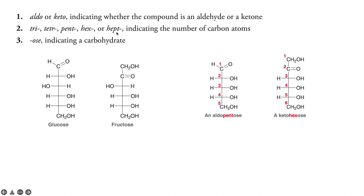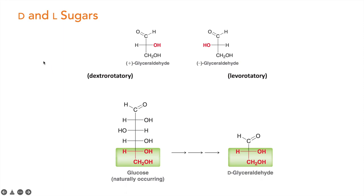We also use prefixes like tri, tetra, penta, hexa, or hepta to represent the number of carbons present. For example, if there is an aldehyde group at the first position and a five-carbon chain, it is an aldopentose. If there is a carbonyl group at the second position with six carbons in the chain, it is a ketohexose. Examples include glucose, fructose, sucrose, and mannose. The suffix '-ose' indicates a carbohydrate.